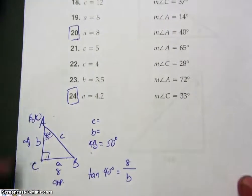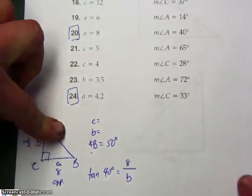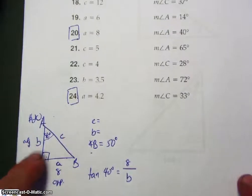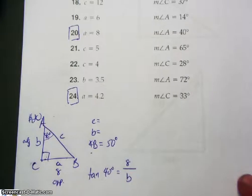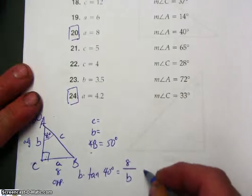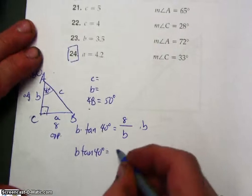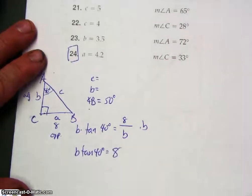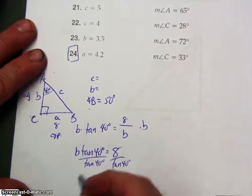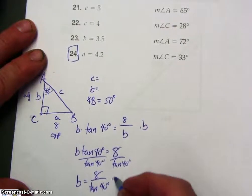All right, now if I pick sine, sine of 40 degrees, A over C, I could do that to find C, but I could not use cosine because I will have two unknowns. So you're going to use tangent or sine in order to find C or B. Multiply both sides by B. So B tangent of 40 degrees, so B is equal to 8 over tangent of 40 degrees.